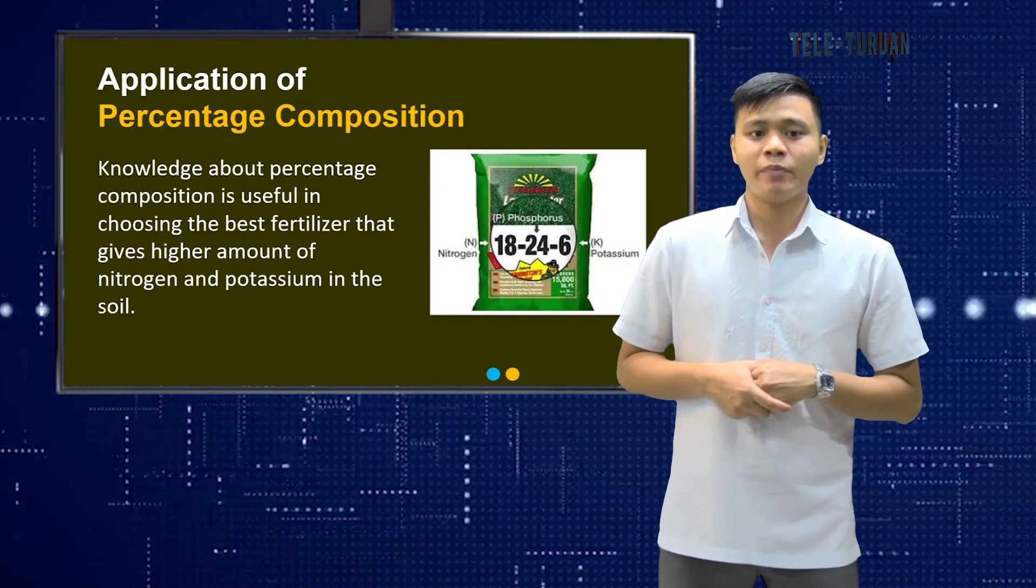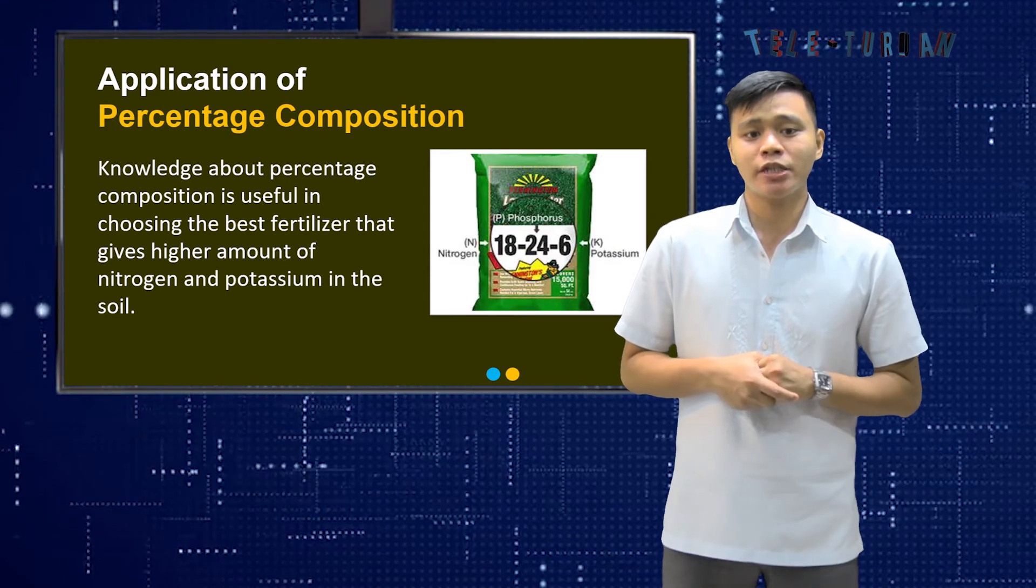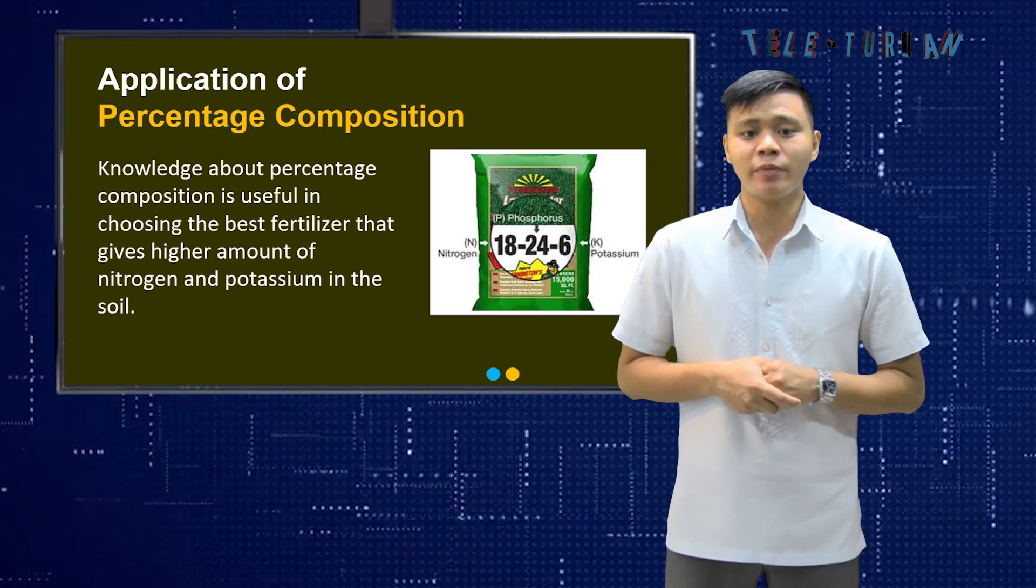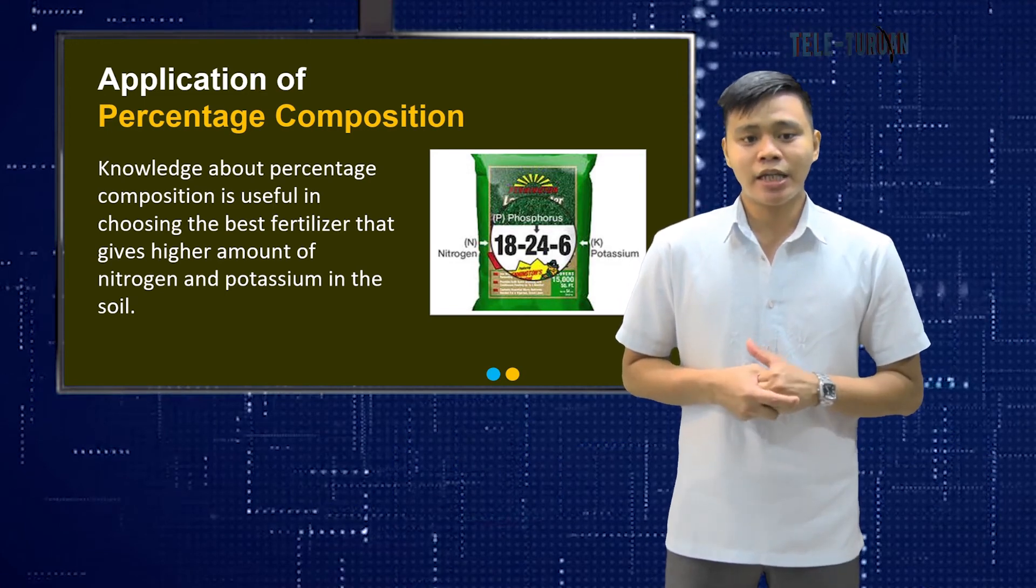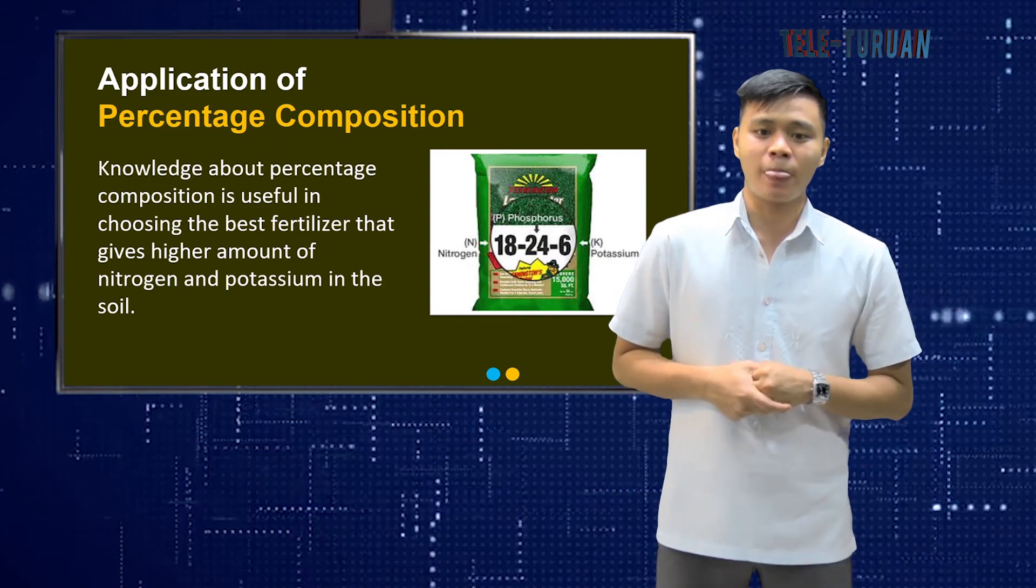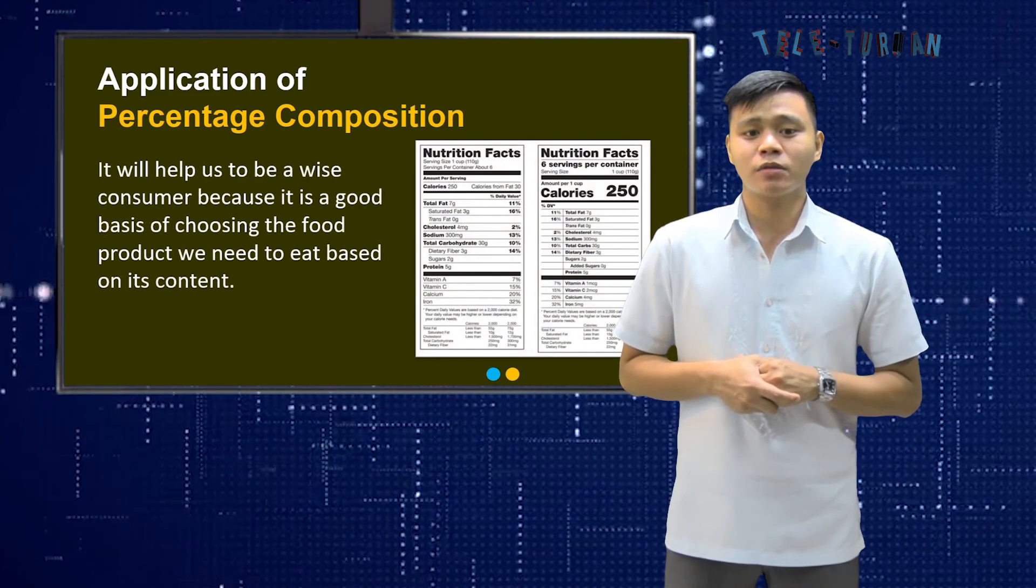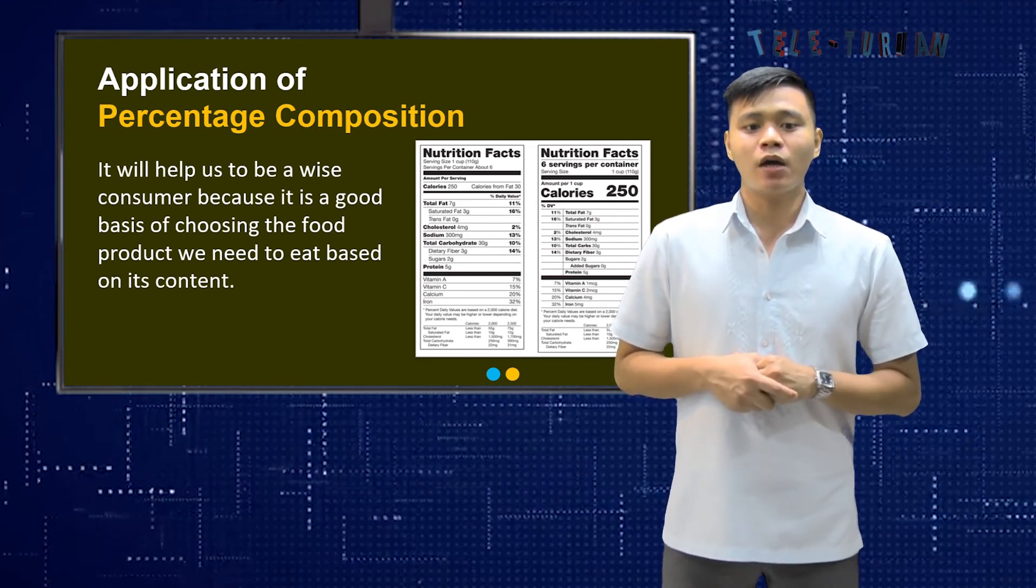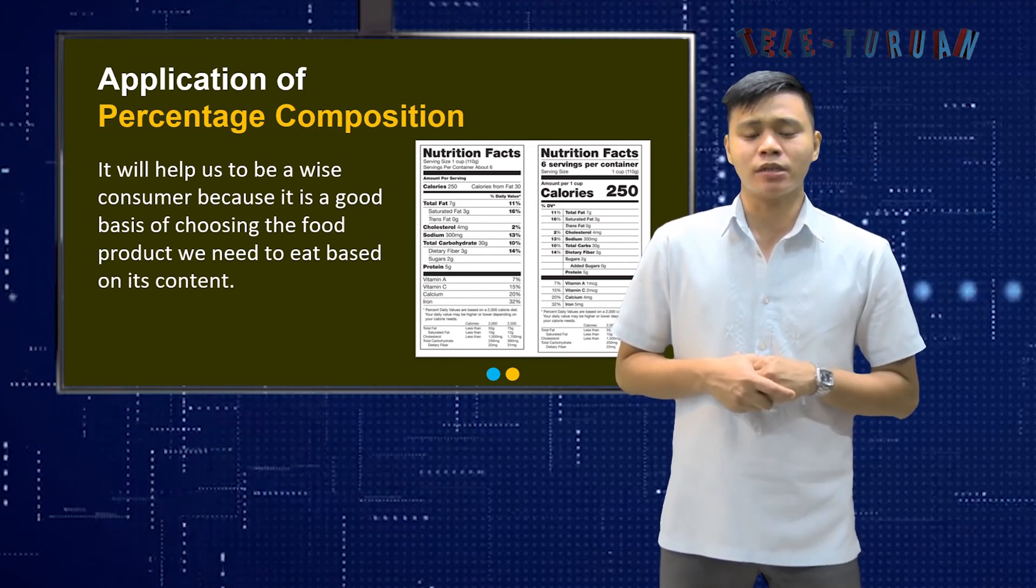Now let's have the applications of percentage composition. Knowledge about percentage composition is useful in choosing the best fertilizer that gives higher amount of nitrogen and potassium in the soil. It will help us to be a wise consumer because it is a good basis of choosing the food product we need to eat based on its content.